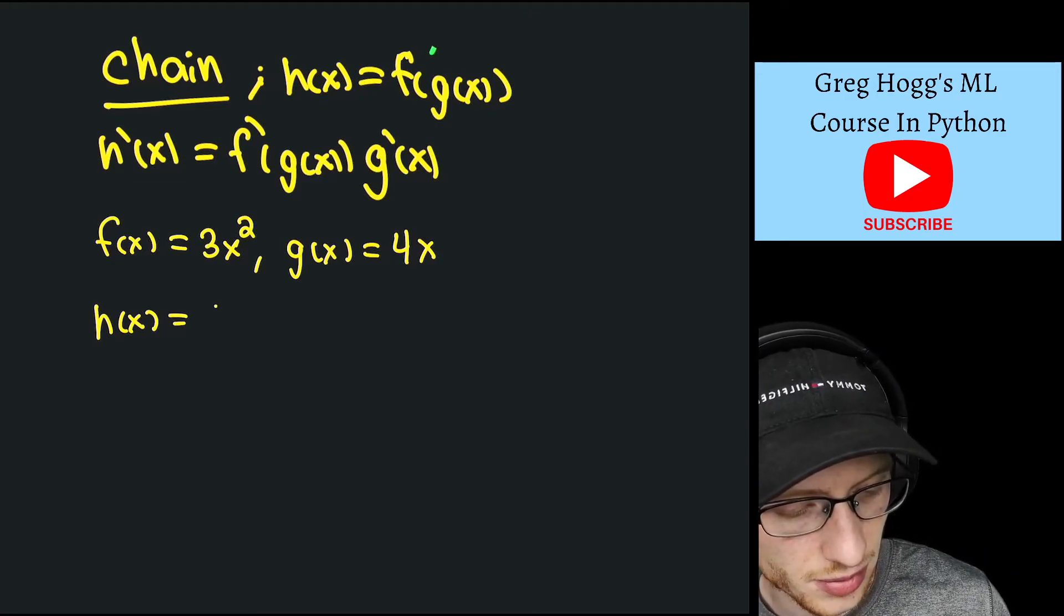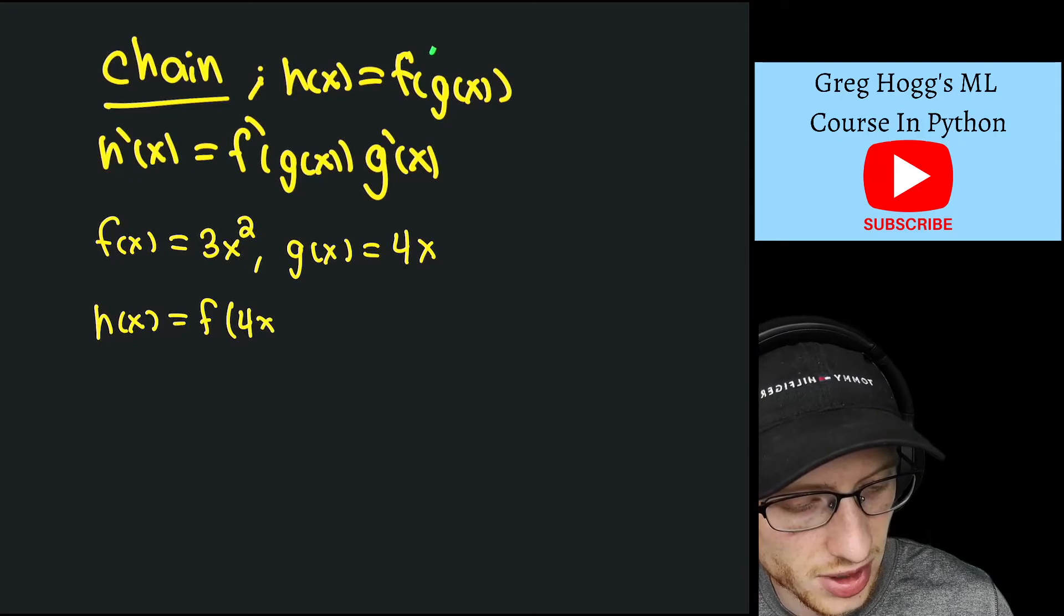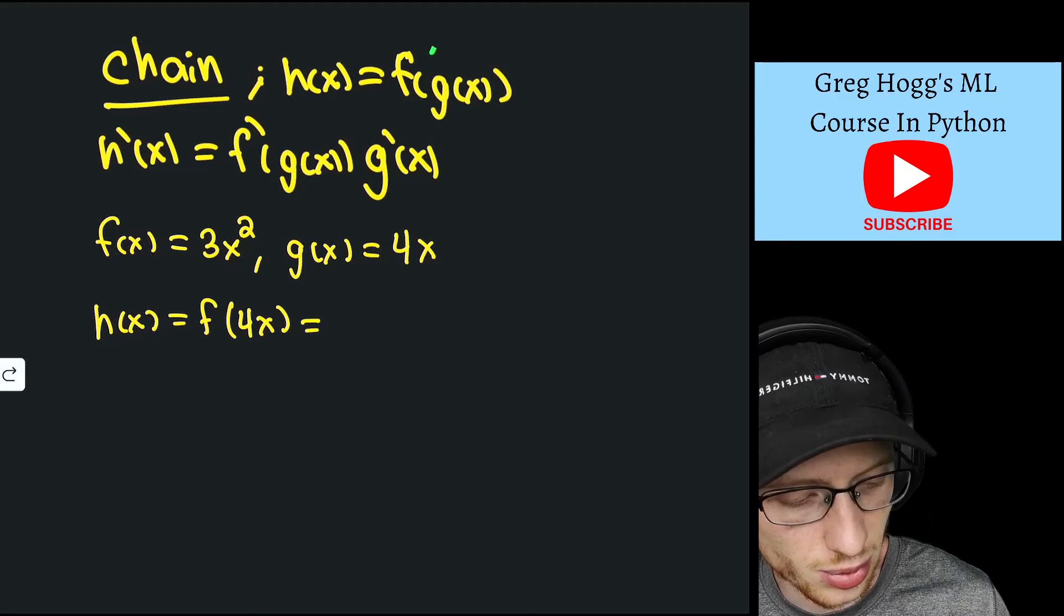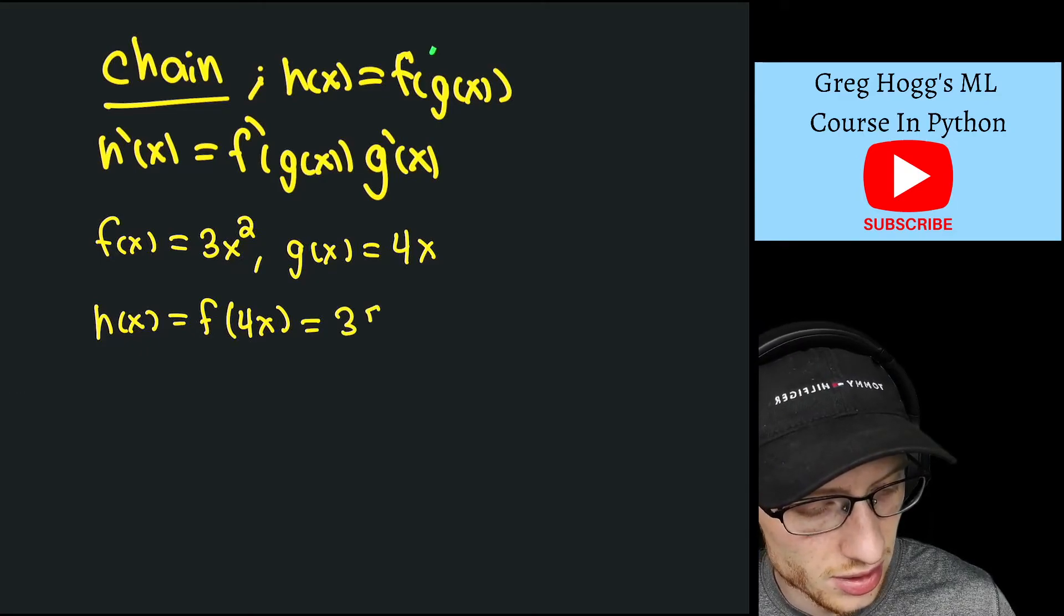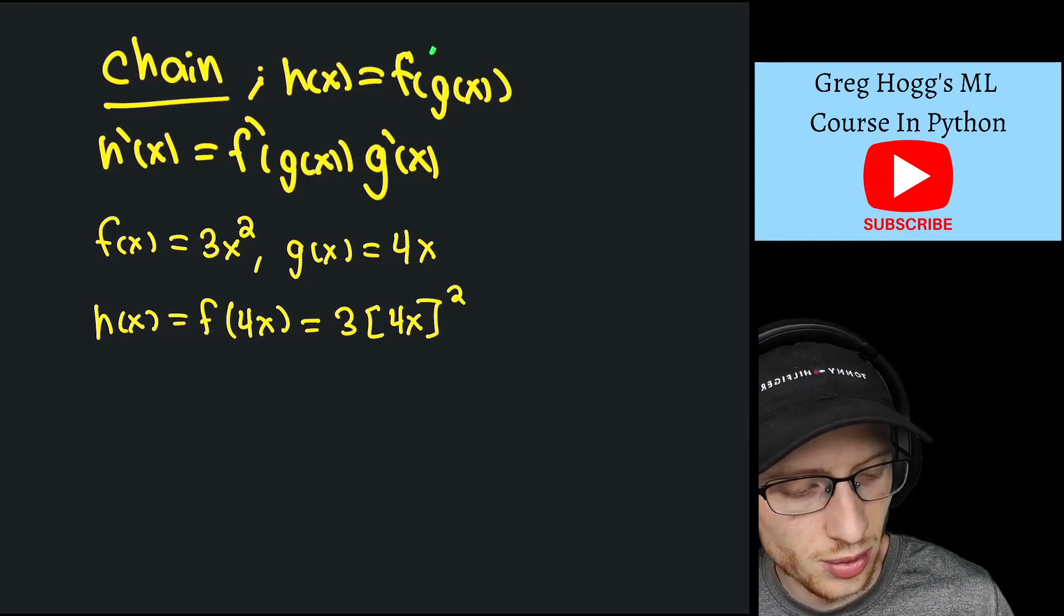And so that means we put 4x into that input, it goes into here, and so we get 3 times that input, 4x, all squared.